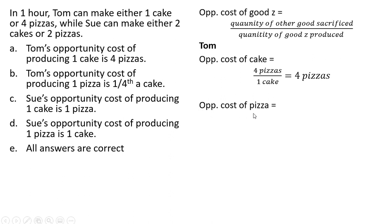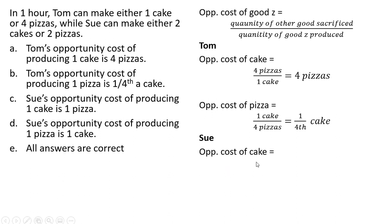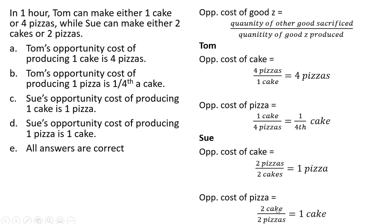The opportunity cost of pizza for Tom: he sacrifices one cake and gets four pizzas, so the opportunity cost of pizza is one-fourth of a cake. Notice these two answers are just reciprocals of one another, and that will always be the case. For Sue, the opportunity cost of cake: she sacrifices two pizzas to produce two cakes, so the opportunity cost of one cake is one pizza. The opportunity cost of pizza for Sue is two cakes divided by two pizzas, which equals one cake — again reciprocals.